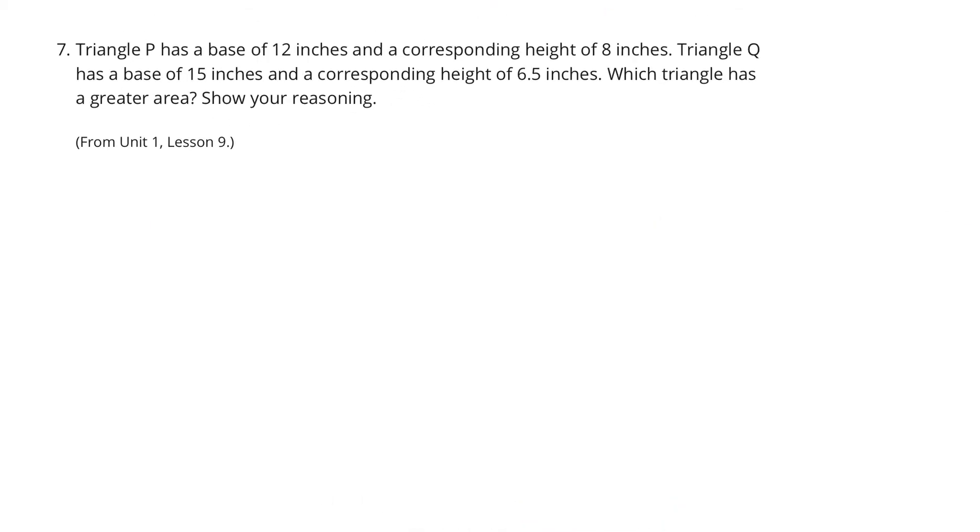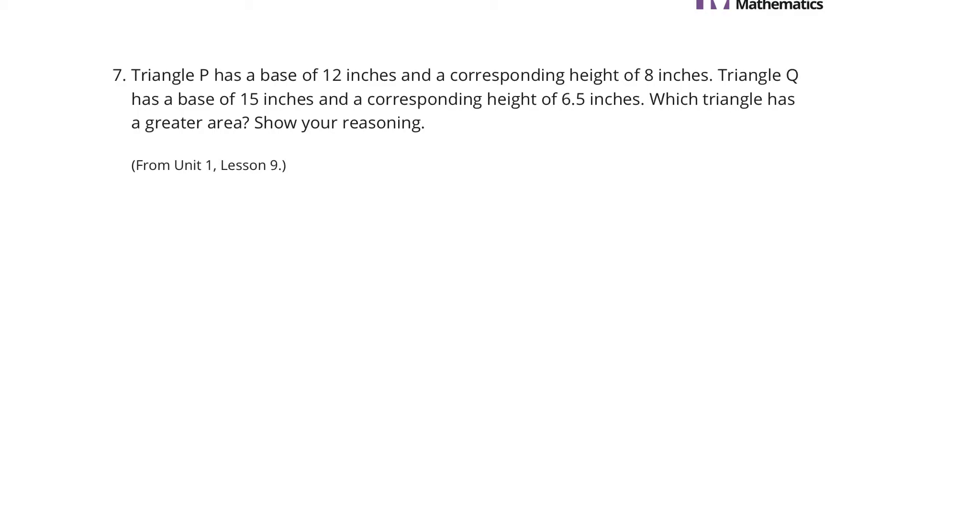Last question. Triangle P has a base of 12 inches and a corresponding height of 8 inches. Triangle Q has a base of 15 inches and a corresponding height of 6.5 inches. Which triangle has a greater area? Show your reasoning. Well, area is equal to 1/2, the base times the height. And so, if we look at triangle P, area is equal to 1/2 base times height. So, 1/2 times 12 times 8, which is going to be 48 square inches.